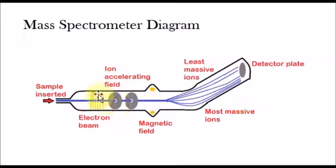Then they pass it through that ion accelerating field in a magnetic field. And what happens is that the least massive ions go to the top, and the most massive ions go to the bottom, and they hit a detector plate.